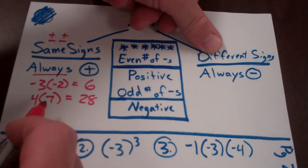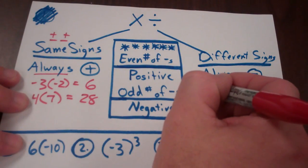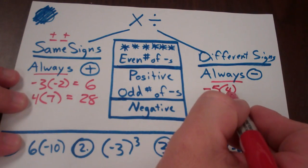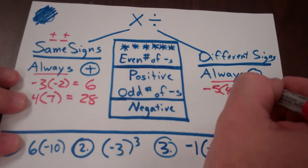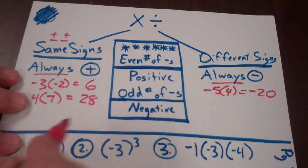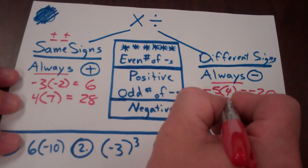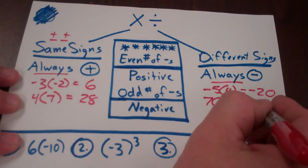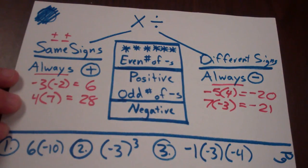If they have different signs, it's always going to be negative. So negative five times four — they only have one negative, so different signs — five times four is twenty, but since I have different signs, my answer is negative twenty. Similarly, seven times negative three: seven times three is twenty-one, but since I have one negative, it's going to be negative because they have different signs.